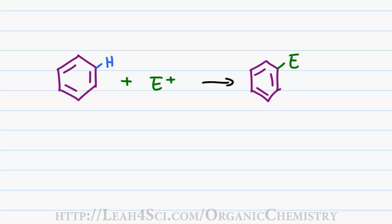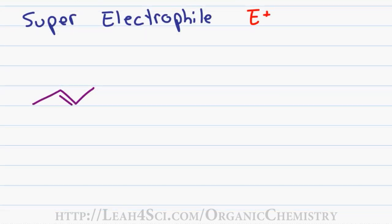I mentioned that this reaction requires a superelectrophile. Let's see why by reviewing an alkene addition reaction. Say I have 2-butene reacting with bromine. The nucleophilic pi electrons will reach out for bromine, bromine attacks back and the second bromine breaks off.